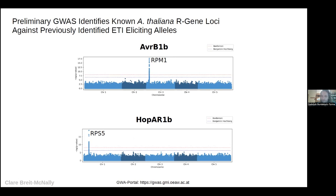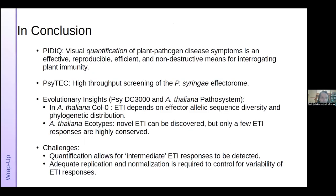To wrap up, I presented two powerful tools in our arsenal for high-throughput screening of pathogen-host interactions: PIDIC, which involves visual quantification of plant pathogen disease symptoms, and Psytec, our set of molecular probes enabling high-throughput screening of the entire Pseudomonas syringae effectorome. Putting these together, we're starting to get important evolutionary insights — underscoring the importance of examining the whole span of effector allelic sequence diversity and host diversity for identifying novel ETIs and improving agricultural crop breeding practices.